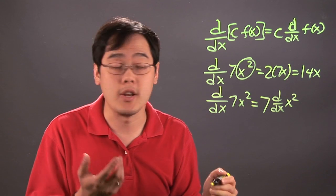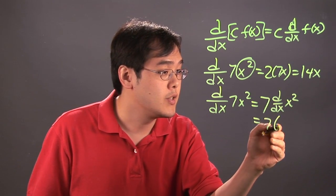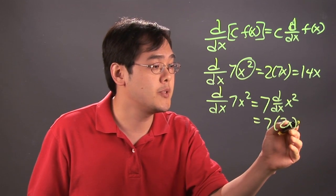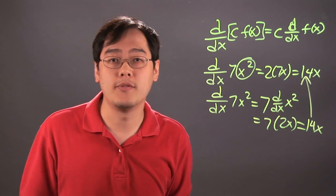And then you'll get the same result, and here's why. The derivative of x squared is 2x. And 7 times 2x is going to give you 14x, which is the same result as what we had before.